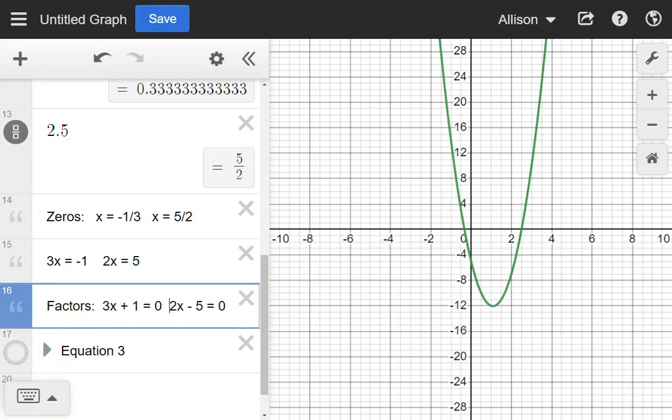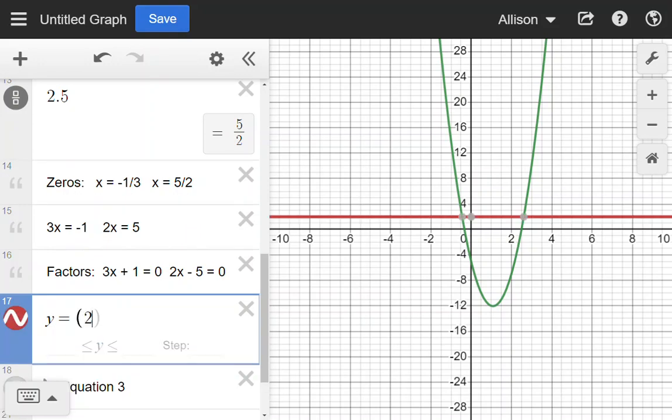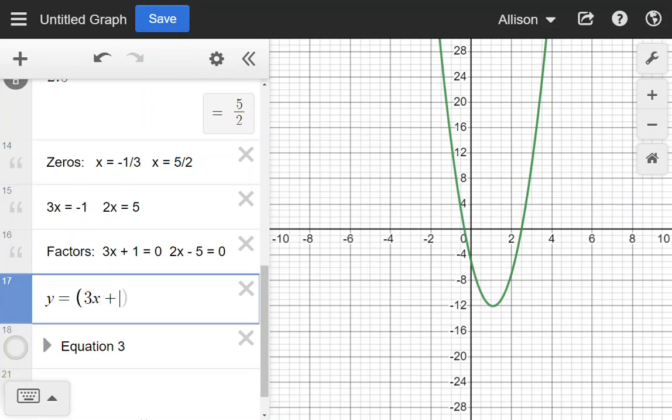So I have those two factors. So I can write my equation with those two factors: y = (3x + 1)(2x - 5). And as you see, I have the correct solution because my graph lines up exactly on the graph I was trying to write the equation for.